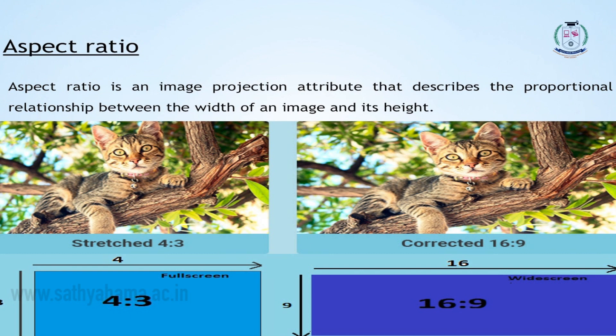Aspect ratio. For a normal screen, 4:3 is the aspect ratio. For an HD screen, the aspect ratio is 16:9.